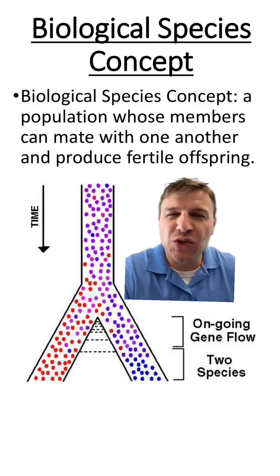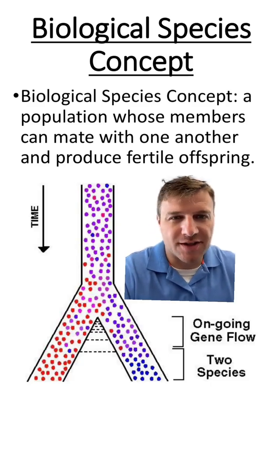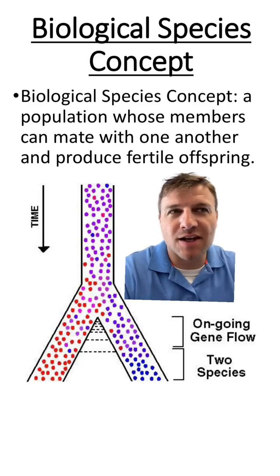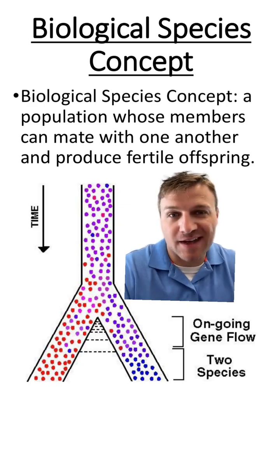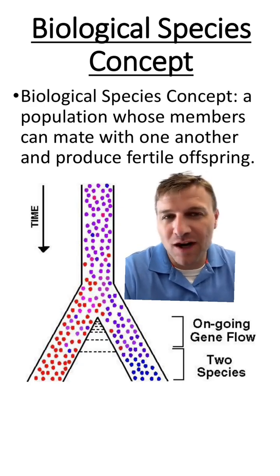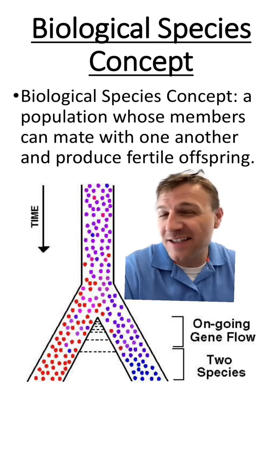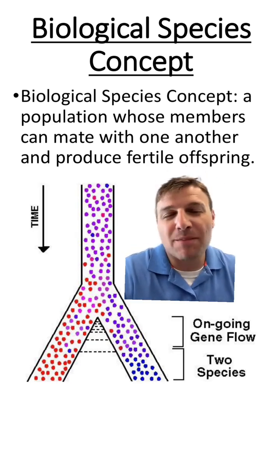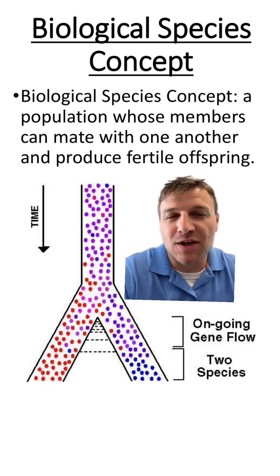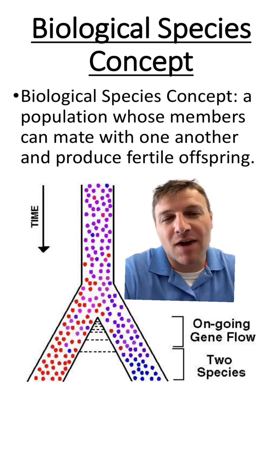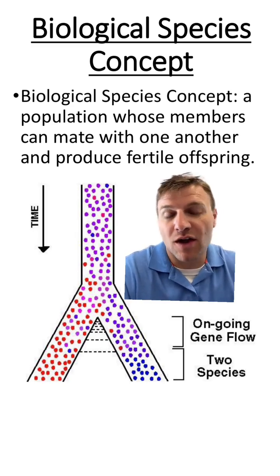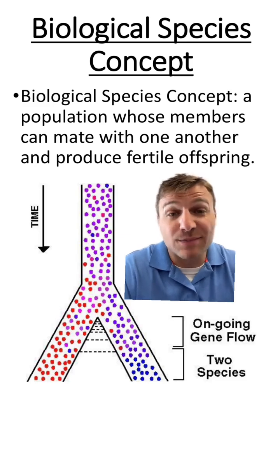Let's talk about the biological species concept. This is basically the understanding of what we classify a species as. Before I begin, I'm going to tell you this has flaws, but nothing's perfect in biology. The biological species concept states that a species is a population whose members can mate with one another and produce fertile offspring.